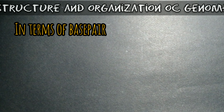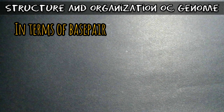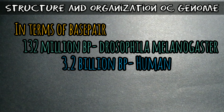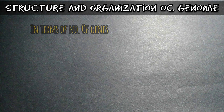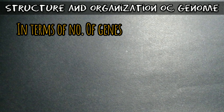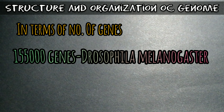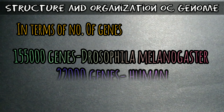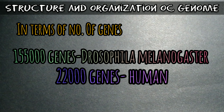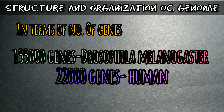In terms of base pairs, the fly genome is only around 5% of the size of the human genome — 132 million base pairs for the fly, compared with 3.2 billion base pairs for the human. In terms of the number of genes, however, the comparison isn't nearly so lopsided. The fly has approximately 15,500 genes on its 4 chromosomes, whereas humans have about 22,000 genes among their 23 chromosomes. Thus, the density of genes per chromosome in Drosophila is higher than for the human genome.